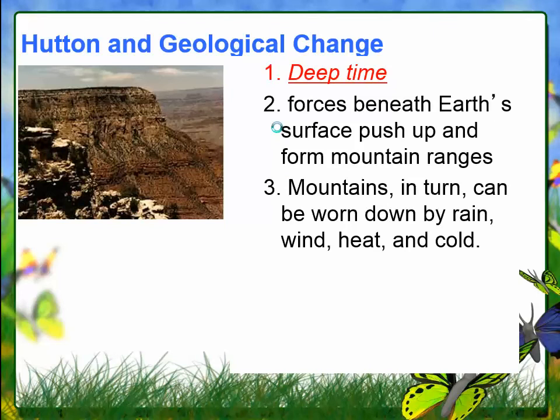Hutton was known for the term 'deep time' — basically that the Earth is really, really old. He was instrumental in explaining that forces beneath the Earth's surface pushed up and formed mountain ranges, and that those mountains can be worn down by rain, wind, heat, and cold — processes that continue to happen in Darwin's time and in our time.